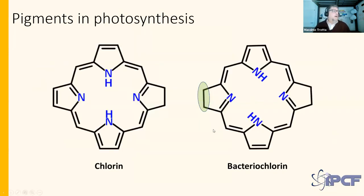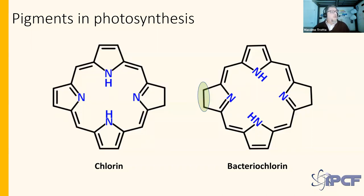Photosynthesis is mostly based on the use of pigments. The most important players in photosynthesis are pigments based on two tetrapyrroles: the chlorin and the bacteriochlorin. The difference is simply one double bond in one of the pyrrole rings. These two molecules are the heart of the photosynthetical photochemical machinery.